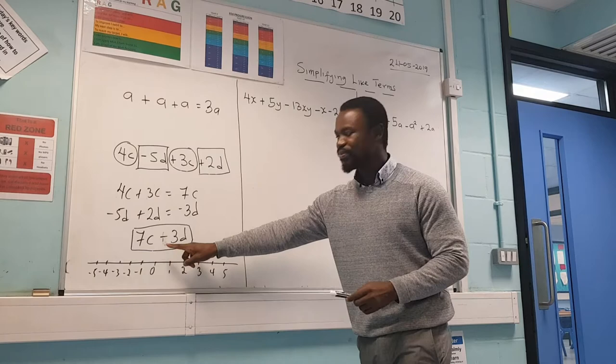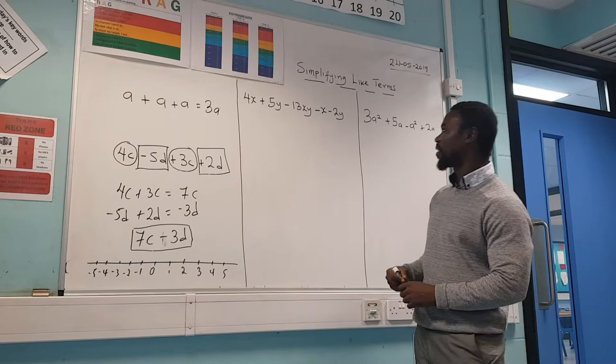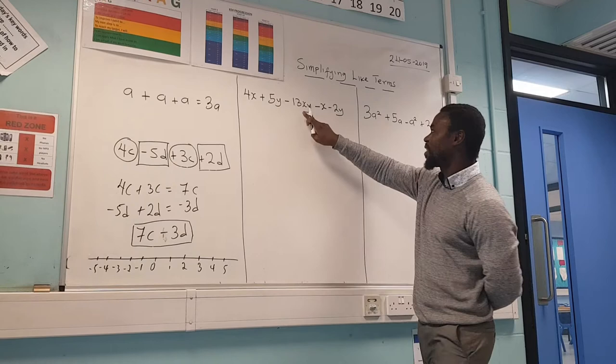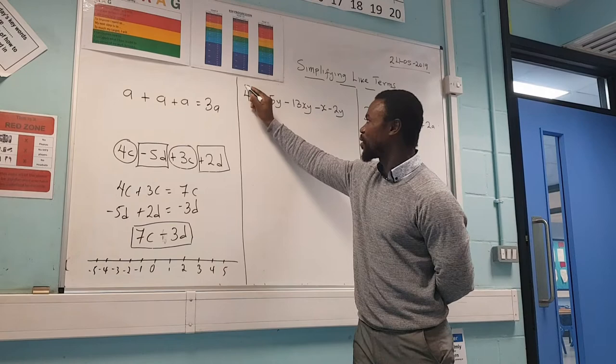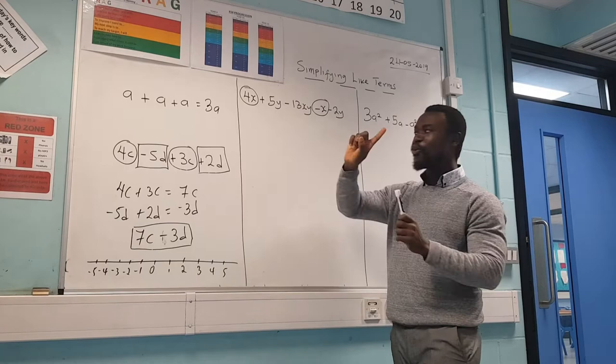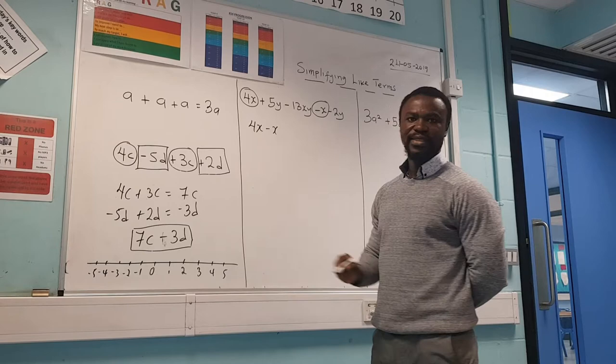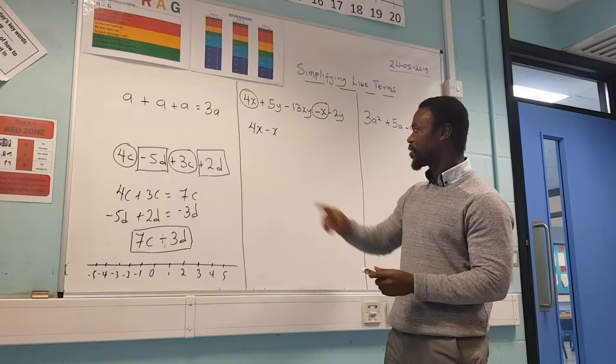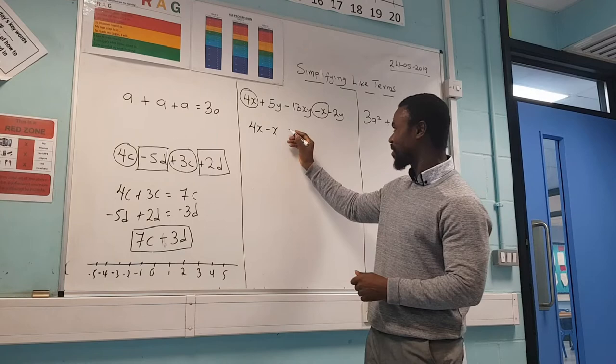Now let's look at this one — we have a lot of terms with different letters. Let's start with those that have X only. There is X here, only X here, and only X here. Let's circle the ones with only X, always circling the sign too. So let's do the ones with only letter X first: four X minus X. X alone means one X, so four X take away one X gives you three X.